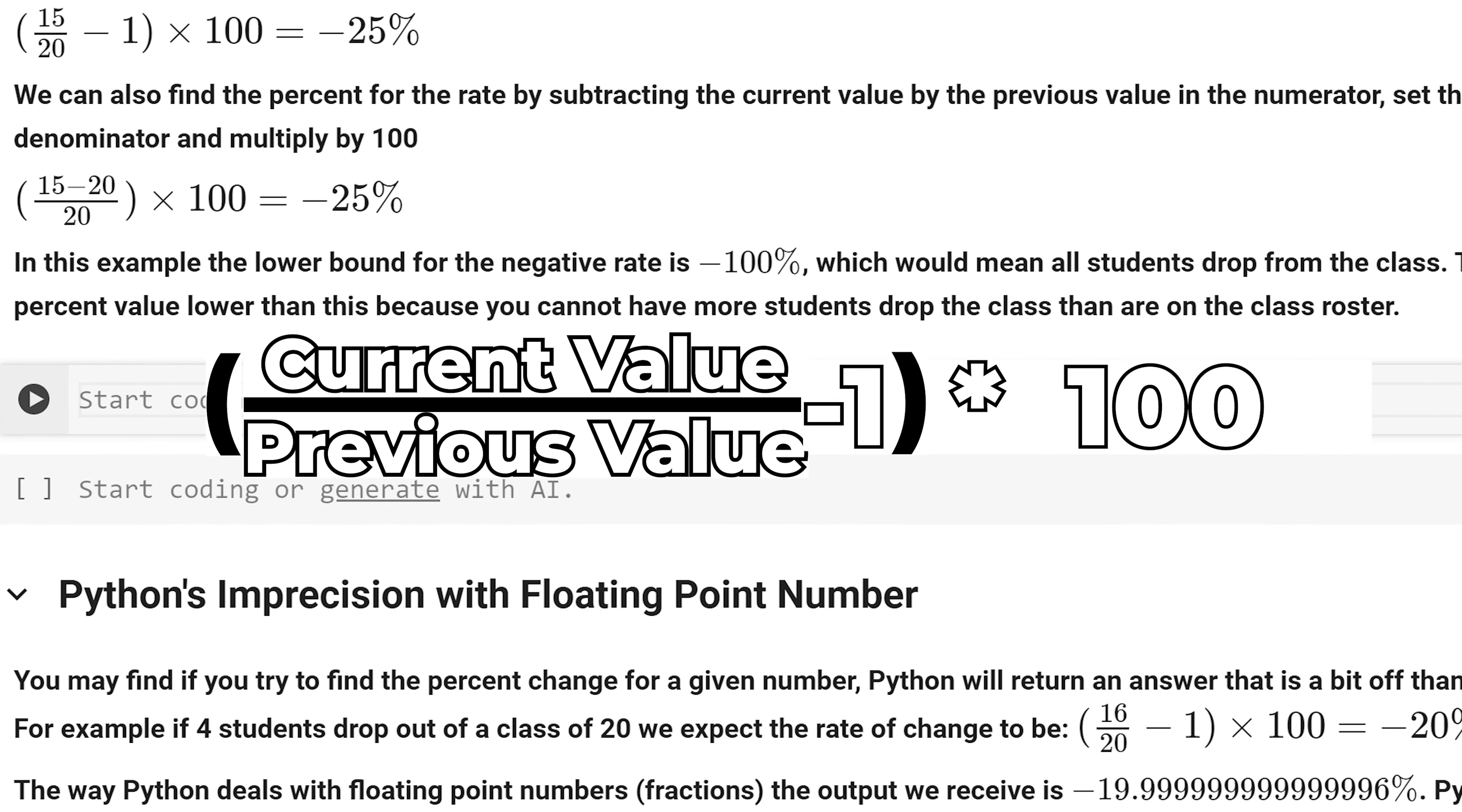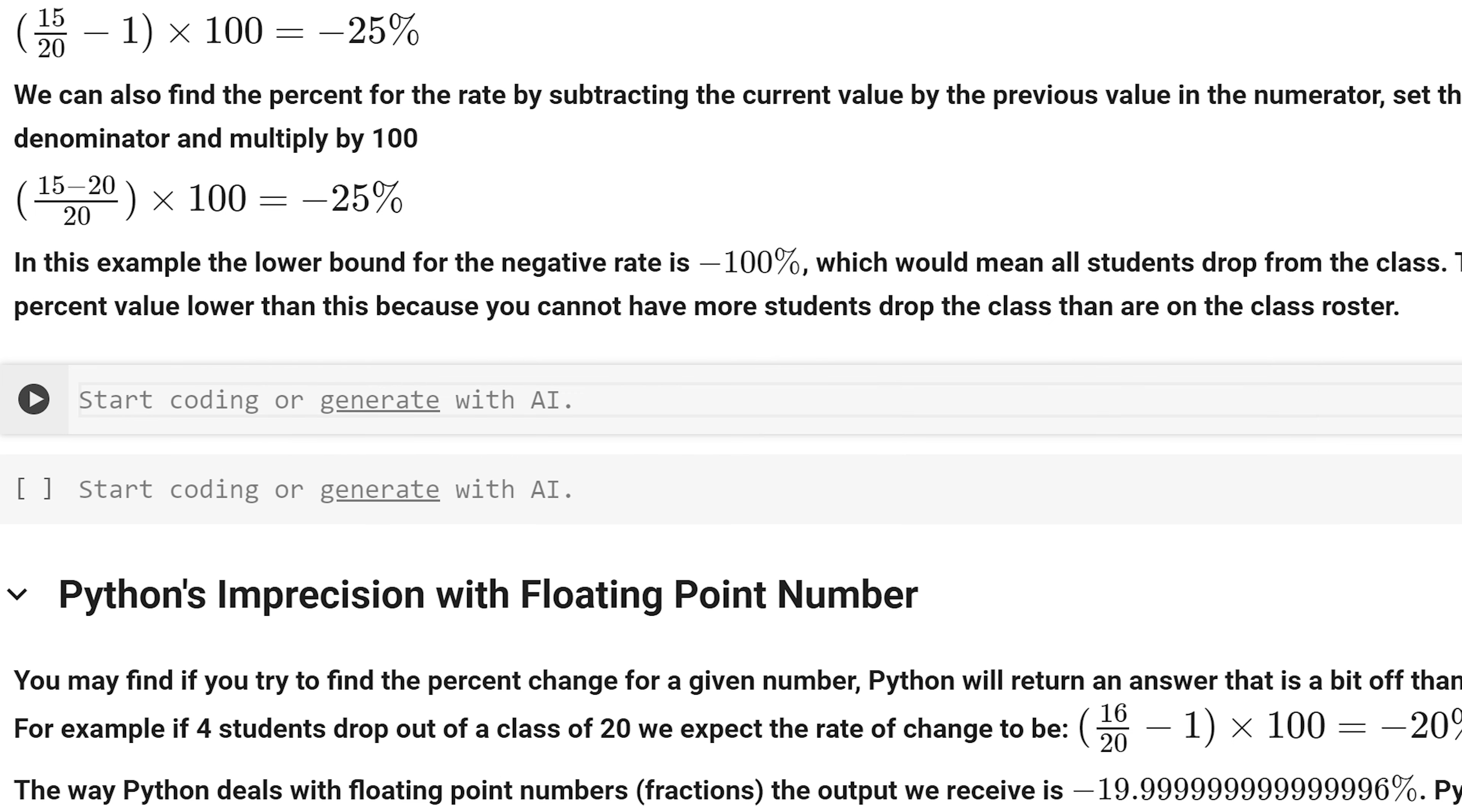For the first method, we are going to take the current value, divide it by the previous value, subtract that by 1, and multiply by 100 to get the rate change, which should be negative 25 percent.